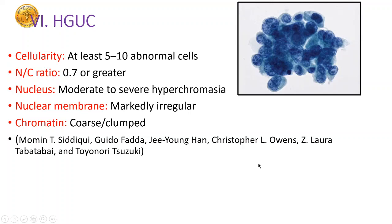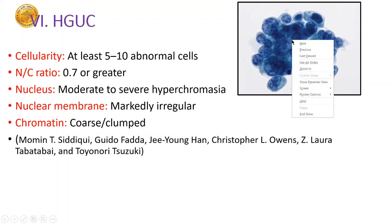We come to the most important category of the Paris classification — HGUC, High Grade Urothelial Cancer. Cellularity: at least 5 to 10 abnormal cells. The N:C ratio needs to be more than 0.7. Just look at the chromatin — it is very hyperchromatic, very dark compared to any nucleus. The nuclear membrane does show some irregularities and the chromatin is coarse and clumped.